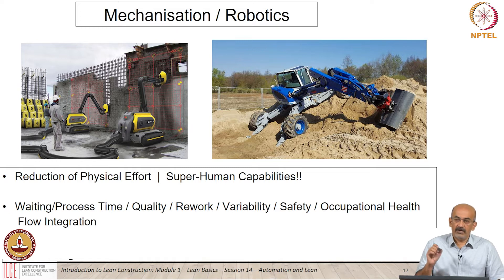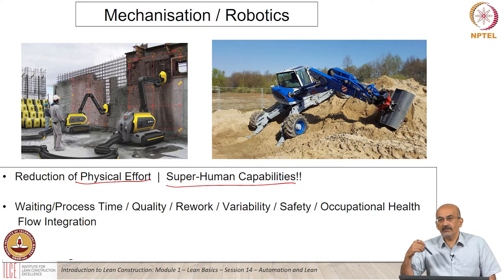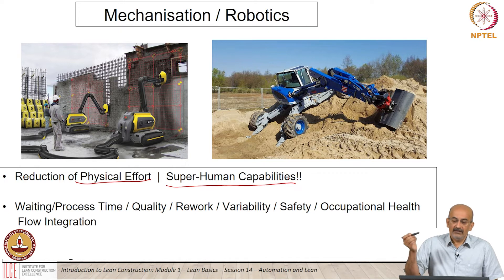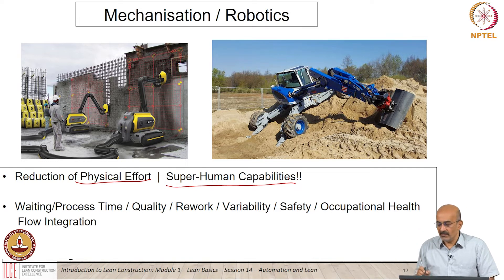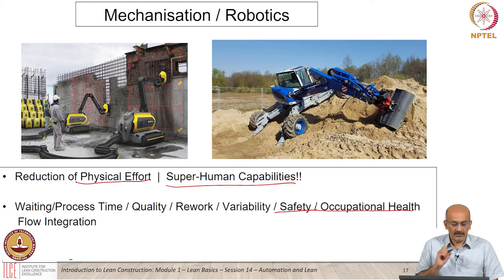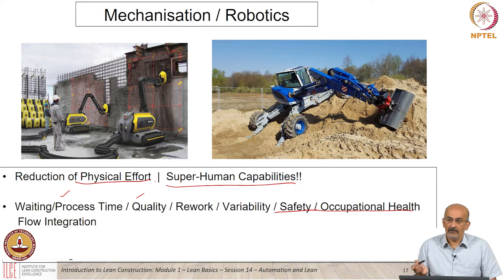This is a bit of a difference from all the IT aspects we looked at. One is definitely reduction of physical effort. We have super-human capabilities — things which manually you just could not do. And this can improve your productivity, your safety performance, occupational health — workers not having to lift all of this gets improved significantly. All of these other aspects which we are interested in for lean have a positive impact.